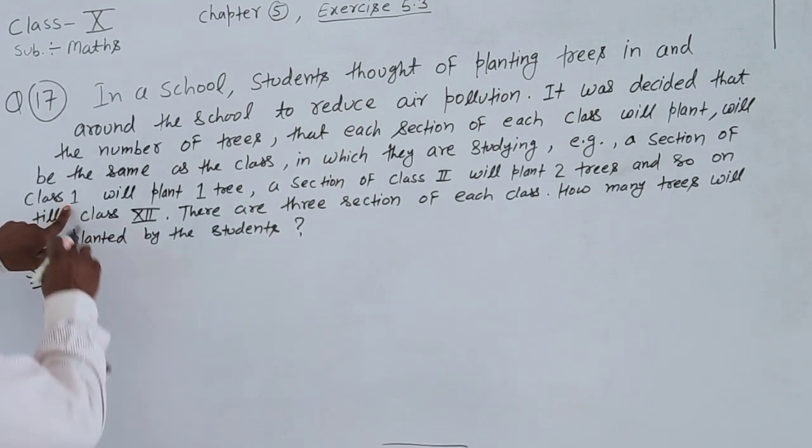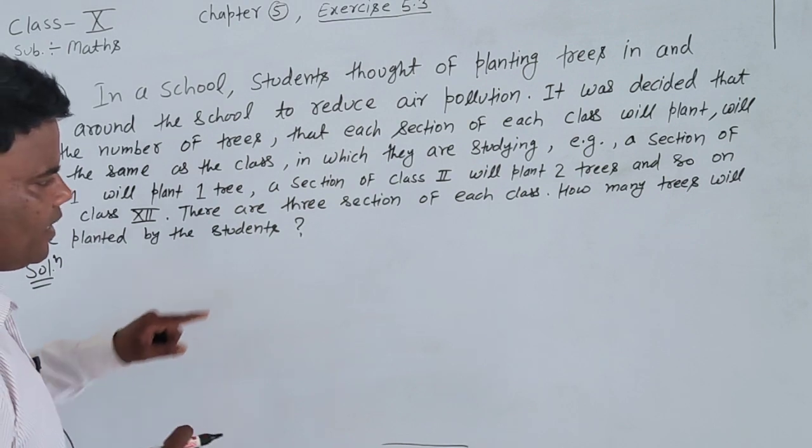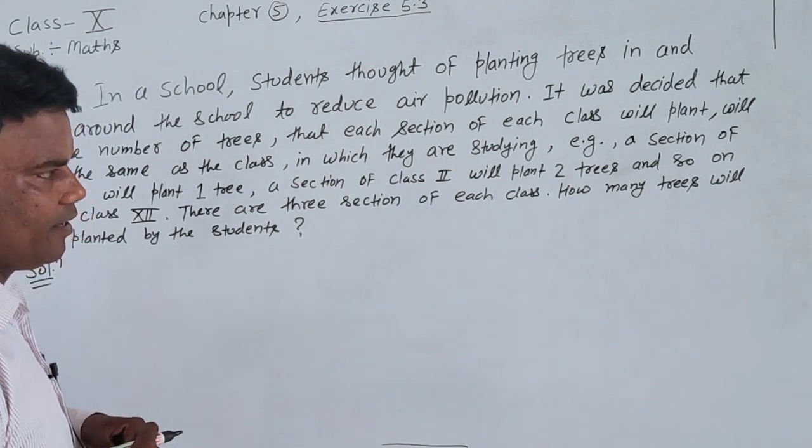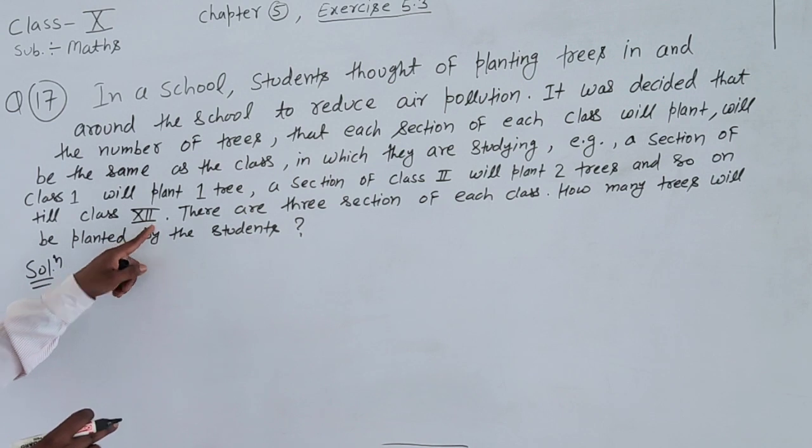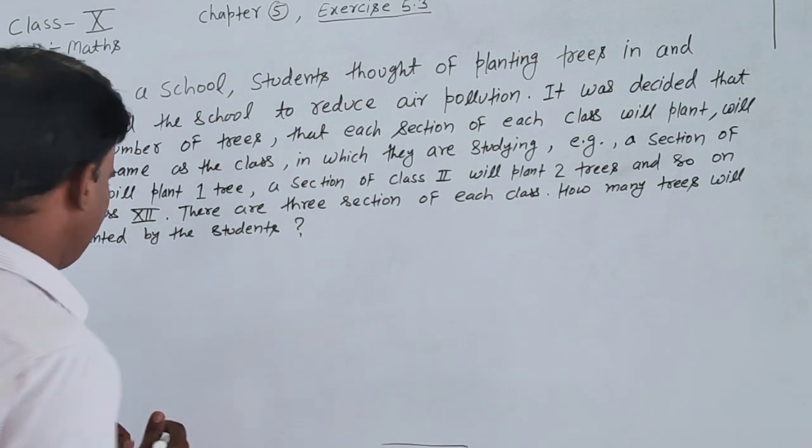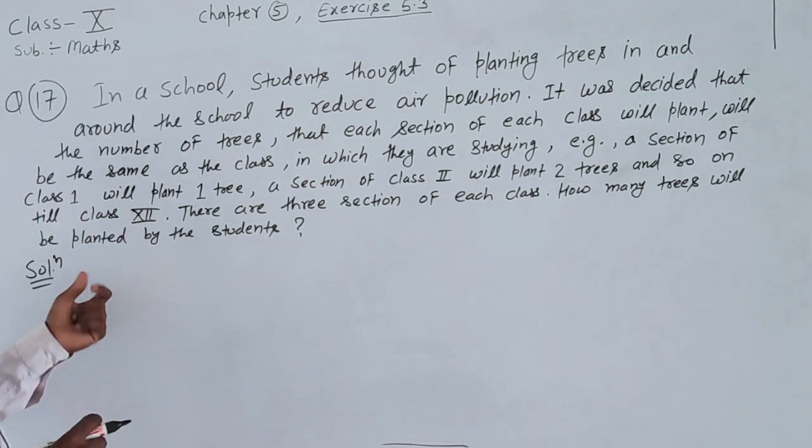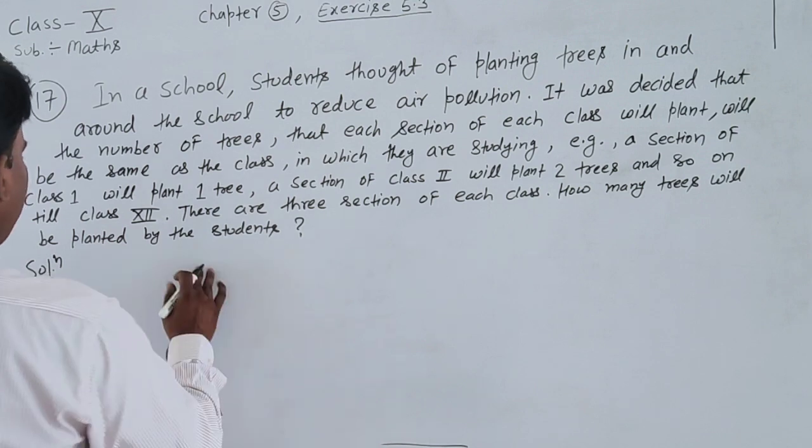So it will be Class 1, so Class 1 plants 1 tree, then 2 trees, when Class 3, 3 trees. Now if it's 12 trees, there are many trees. Each class has 3 sections, so one tree plant, one by one tree plant.